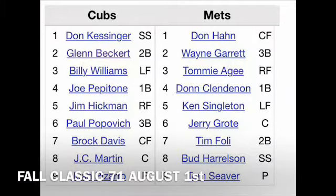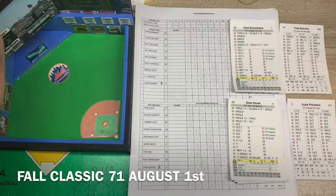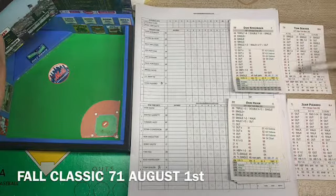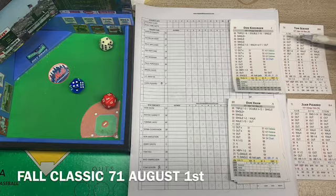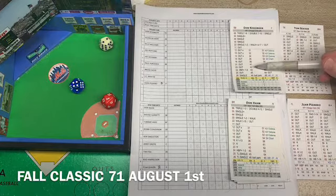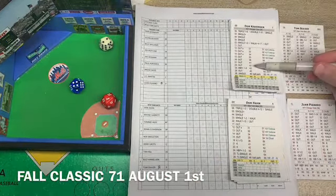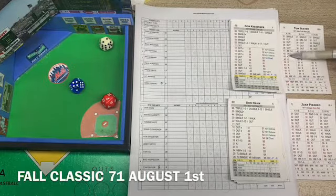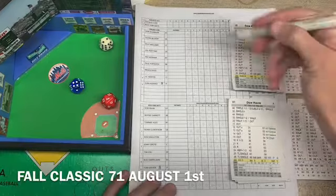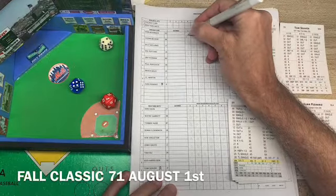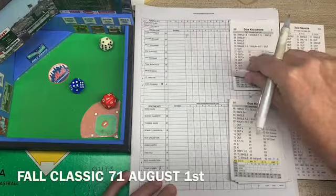The lineup for the Cubs is Kessinger, Beckert, and Williams, Pepitone, Hickman, and Popovich, Davis, Martin, and Pizarro. Here's Tom Terrific — today I rolled for his stuff, he has A stuff so we're using the A column. This is Fall Classic Baseball. A roll of 42 — we look on the batter card first, it's blank, so we look at Seaver's card and it's an out. A 42 tells us it's a ground ball hit back to the pitcher, Seaver handles that and throws out Kessinger — one away.